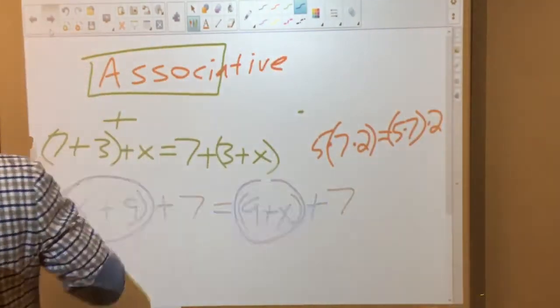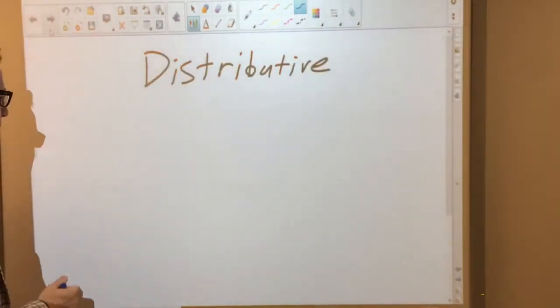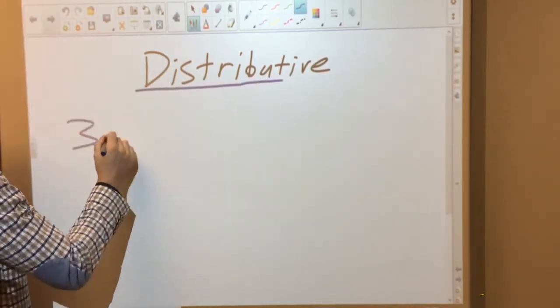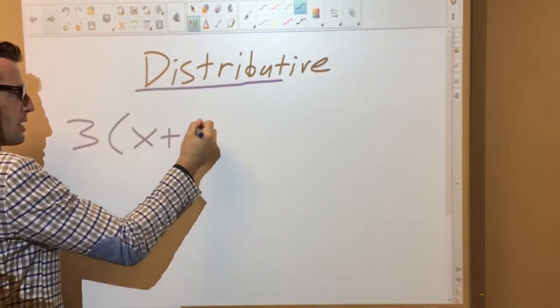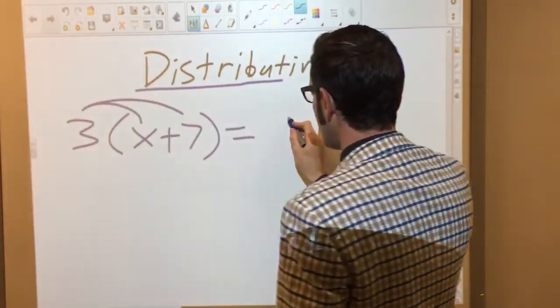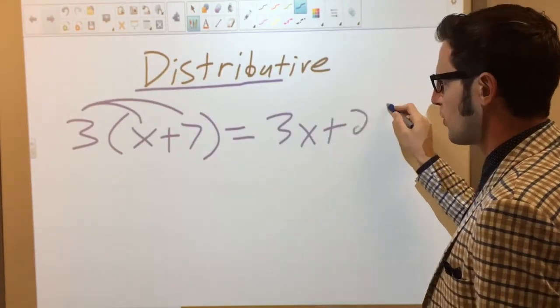The last one is the distributive property, which you've definitely seen before. Where it's distributing, it's giving out. 3 times x plus 7 can be rewritten as 3 times x plus 3 times 7, or 3x plus 21.